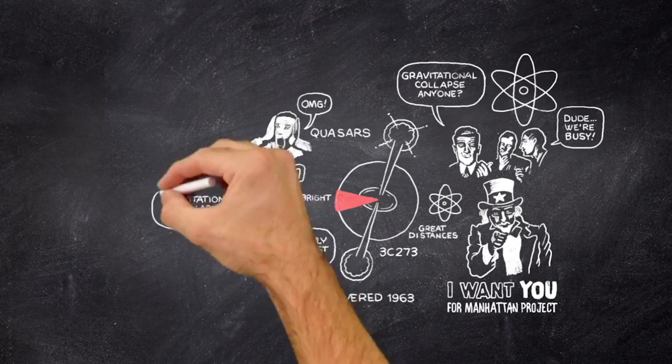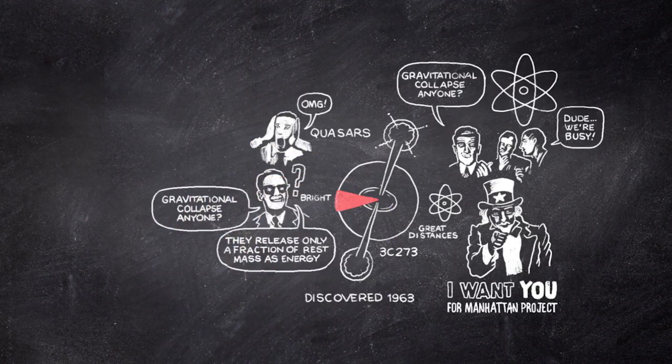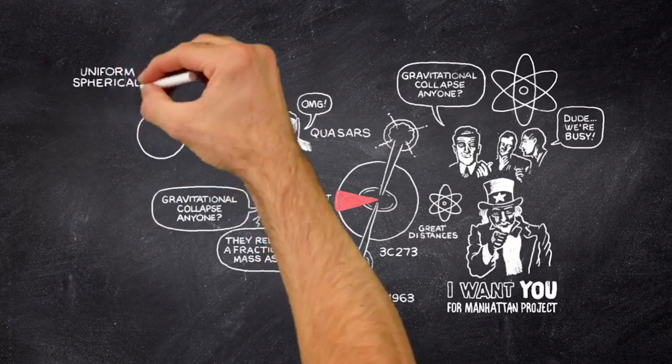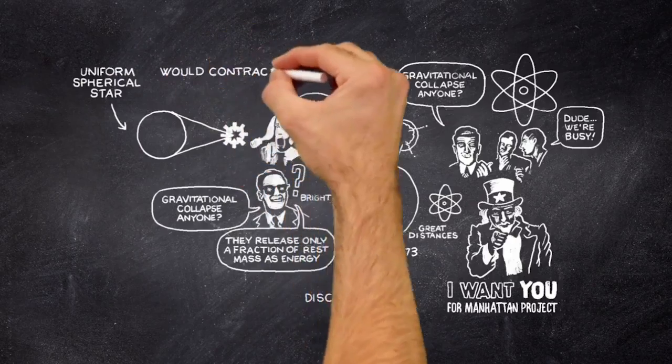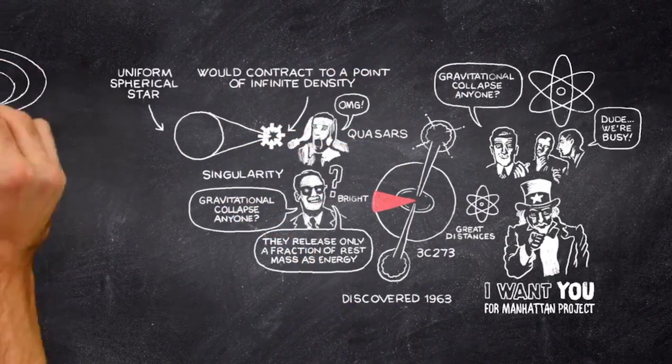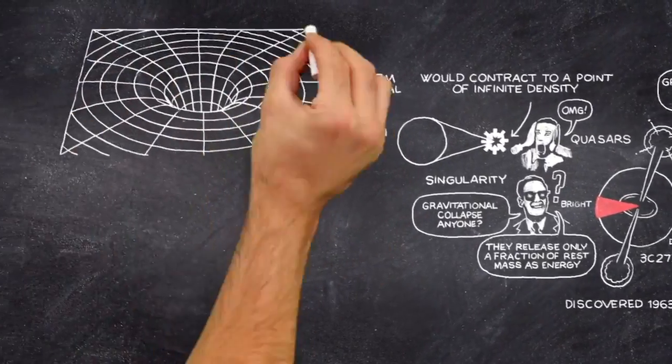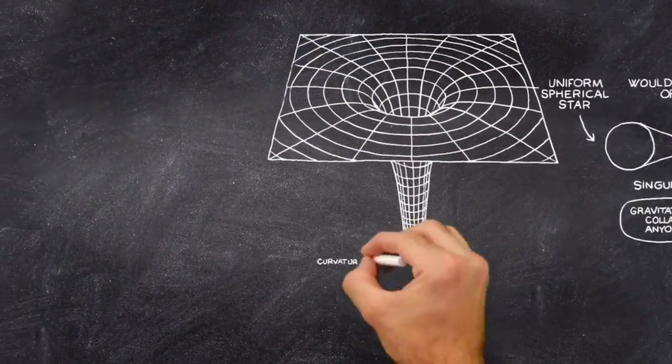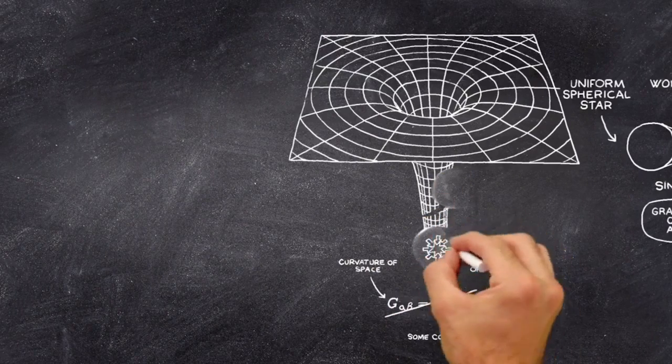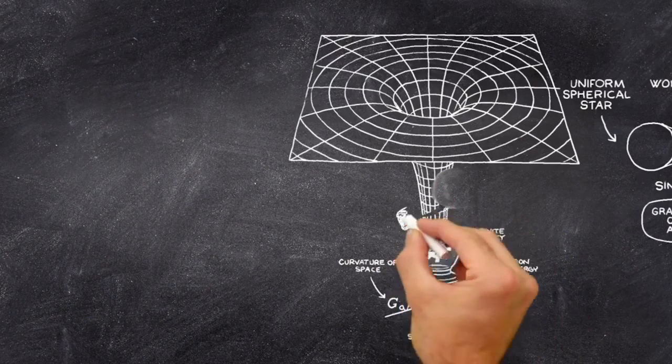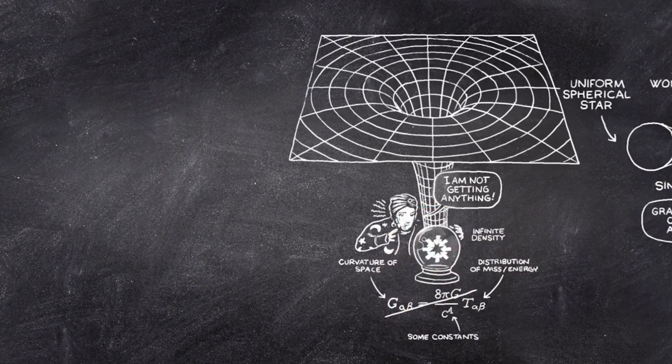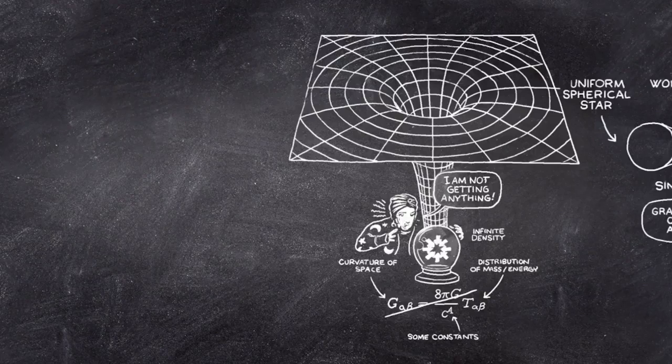Gravitational collapses of stars were rediscovered. It was clear that a uniform spherical star would contract to a point of infinite density, a singularity. The Einstein equations can't be defined at a singularity. This means at this point of infinite density, one can't predict the future. This implies something strange could happen whenever a star collapsed.